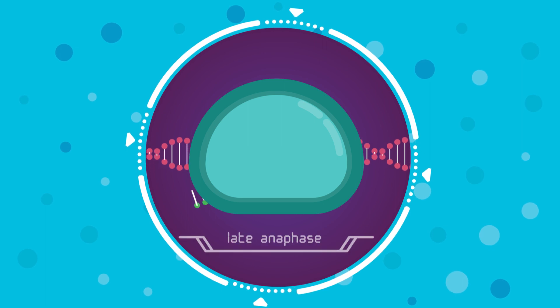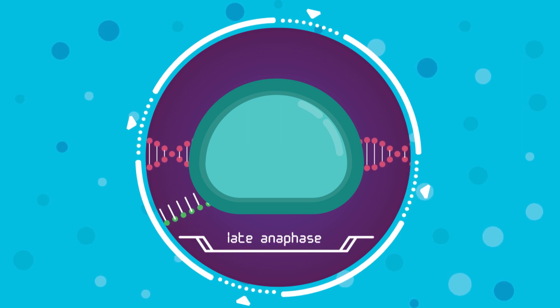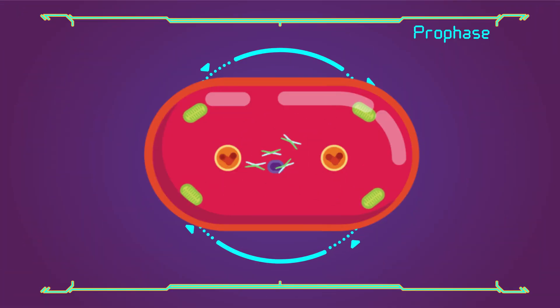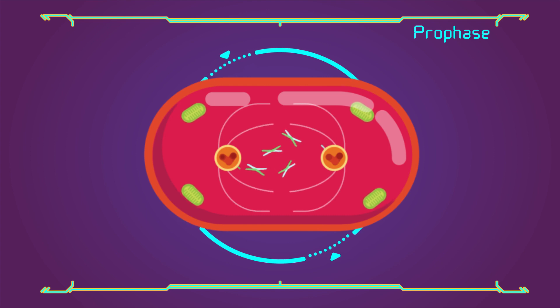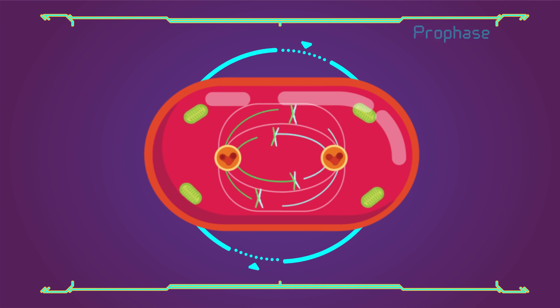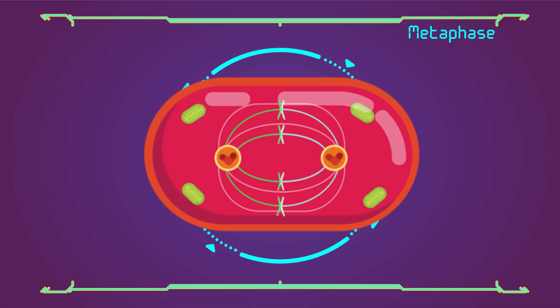Centrosome gives rise to mitotic apparatus, i.e., generation of spindle tubules. Metaphase: now all the pieces are aligning themselves for the big split. The DNA lines up along a central axis and the DNA chromatin has now condensed into chromosomes.